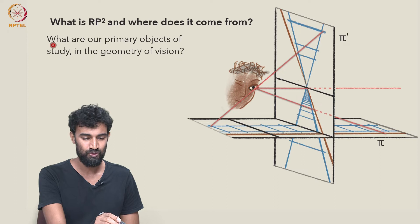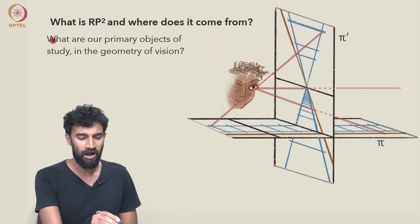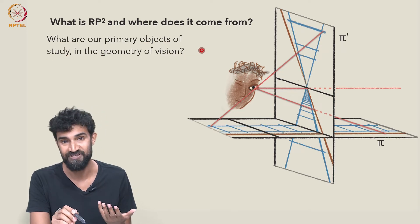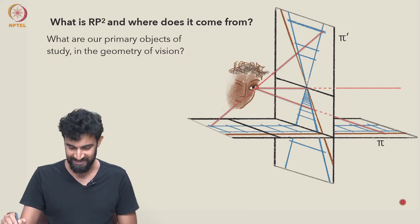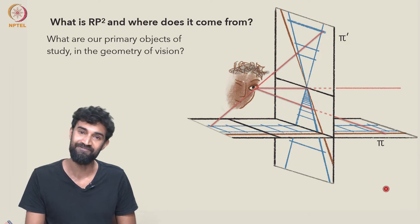So I want to go back to an even more basic question, which is what are our primary objects of study in the geometry of vision? What are we actually studying when we try and explore the geometry of vision?